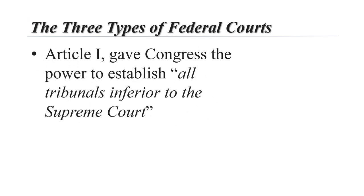Article 3 of the Constitution is the shortest of the three articles establishing the institutions of government. Yet, as brief as it is, it instructs the judiciary to resolve several kinds of cases, including those to which the United States is a party in enforcing the laws, and disputes between citizens of two or more states. Article 3 is not the only part of the Constitution that deals with the federal judiciary. In Article 1, the framers gave Congress the power to establish all tribunals inferior to the Supreme Court, which means that Congress could establish the lower court systems.